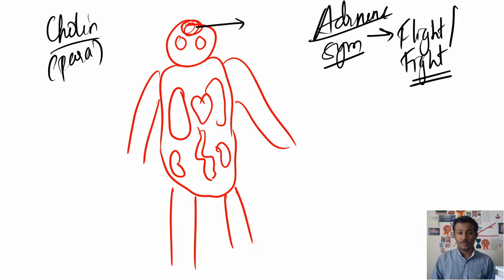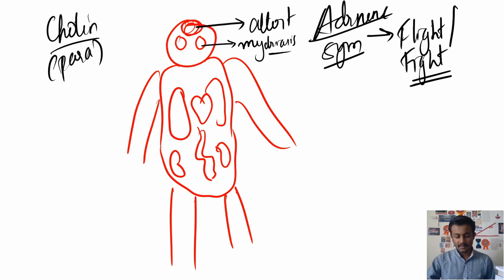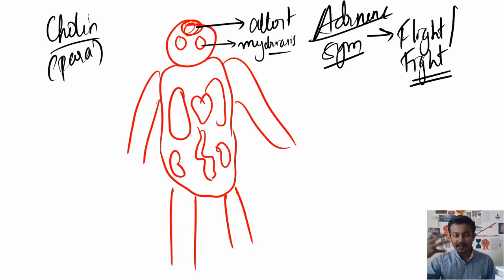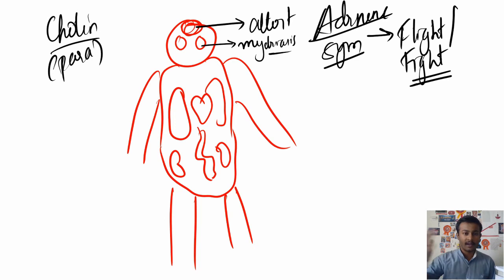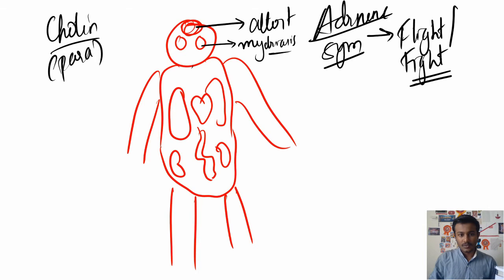So in a flight-or-fight response, your mental condition should be alert — so the adrenergic system causes alertness. Next, the eyes: it causes mydriasis, meaning pupillary dilation. Why do you need pupillary dilation? Because you need more light entering your eyes so you have more information during a fight — you need information about all your surrounding areas, and hence you need mydriasis.